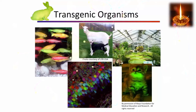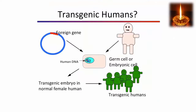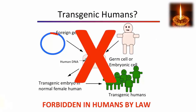Except humans. Transgenic humans are disallowed by law in most countries because the risks of the process are manifold and the changes introduced are permanent in the genetic lineage.